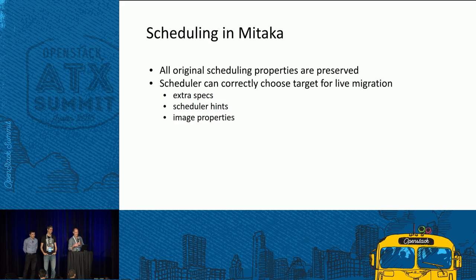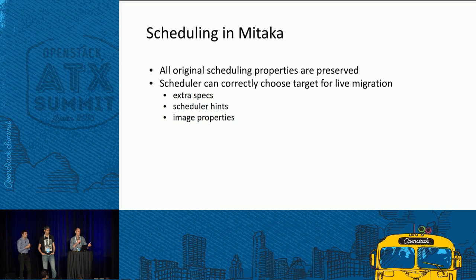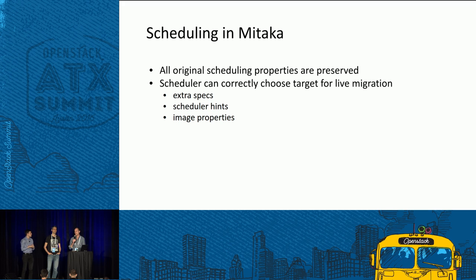One thing that didn't work properly was scheduling during live migration. Operators would typically direct where to schedule a VM because the properties used when originally booting a VM weren't all kept, so you couldn't rely on them for scheduling. Now that's been fixed — you can let Nova schedule the live migration for you and it will know what it's doing.